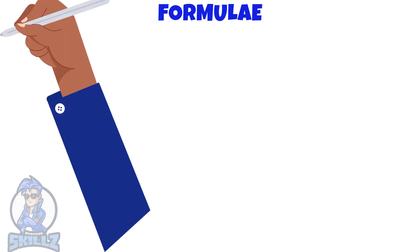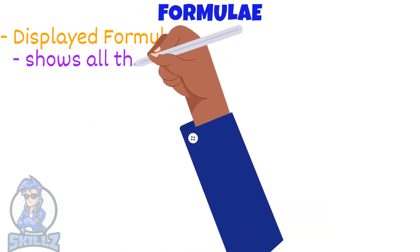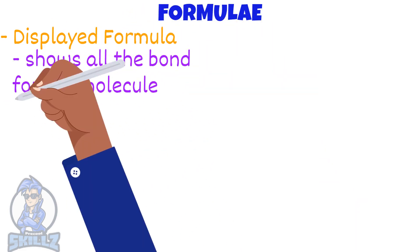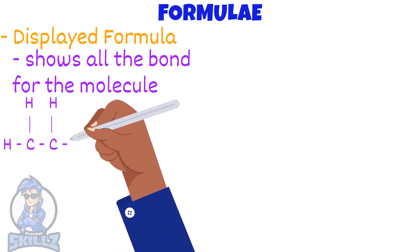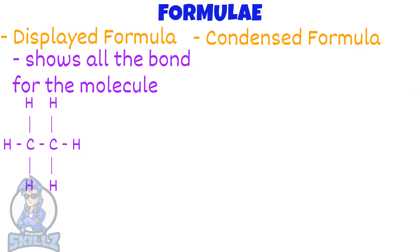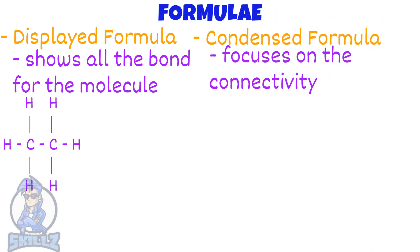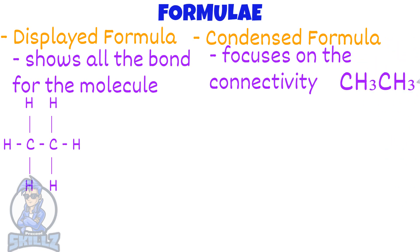Let's start with displayed formula. Displayed formula shows all the bonds for the molecule. This is the displayed formula for the molecule ethane. Next is condensed formula. As the name suggests, it does not show all the bonds but instead focuses on the connectivity of the atoms. This is the same ethane molecule shown through a condensed formula.